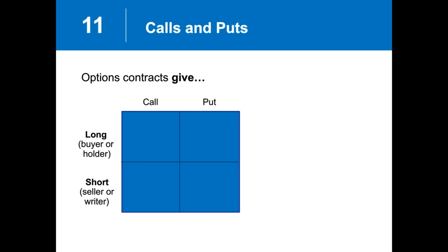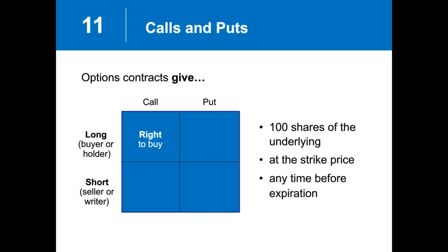If you purchased a call option, you have paid for the right to buy 100 shares of stock at a strike price, and you own that right any time up to and including expiration day. If you bought a put option, you've paid for the right to sell shares of stock at a particular price at any time up to and including expiration day. Brokerage firms accept exercise instructions up to a cutoff time on expiration day — it differs from firm to firm, so know what time that is.